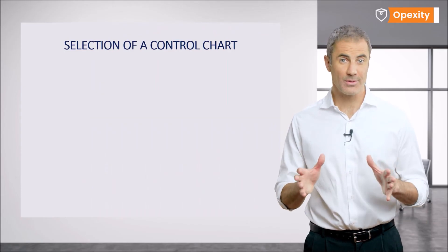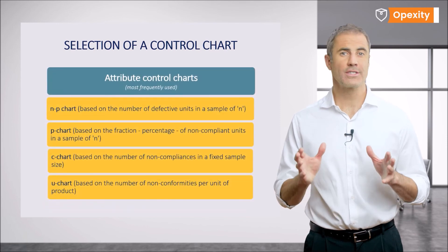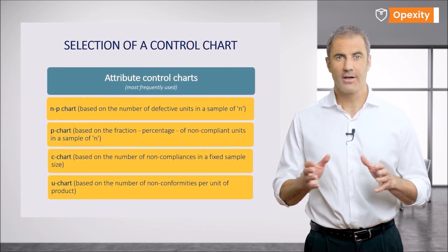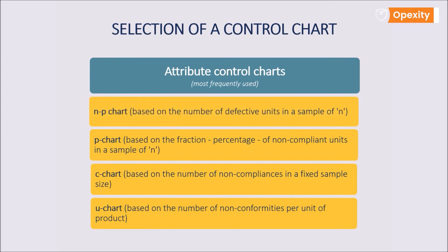In the case of attributable control charts, the choice is also quite large. The most popular charts are NP chart, which are based on the number of non-compliance units in a sample of N. This chart can be used to control products with minor defects on the product that are more than 5%.